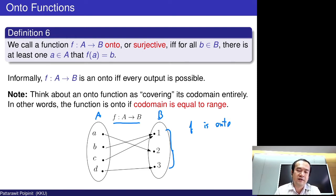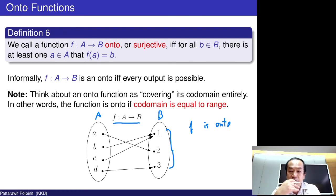Informally, we say that a function f from A to B is an onto function if and only if every output is possible.